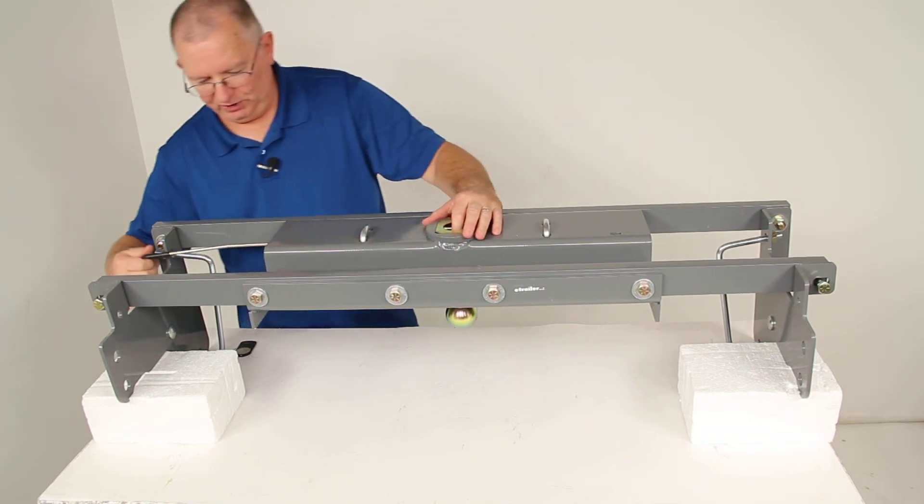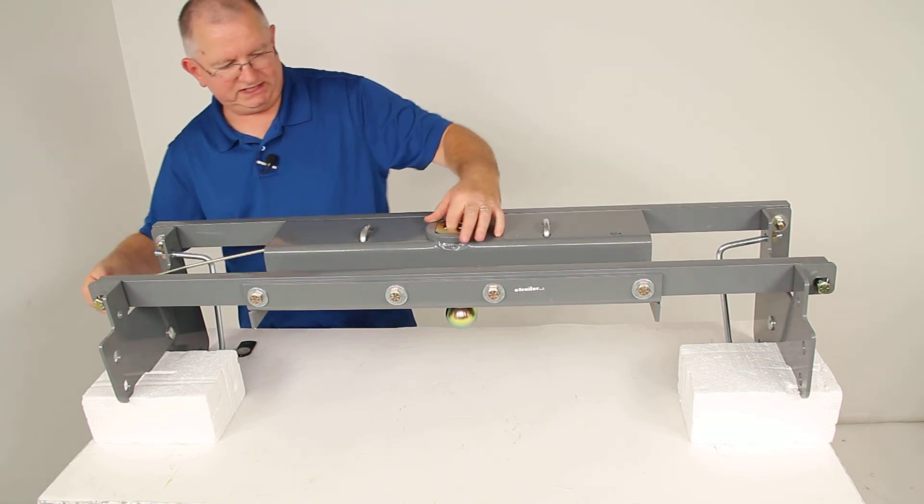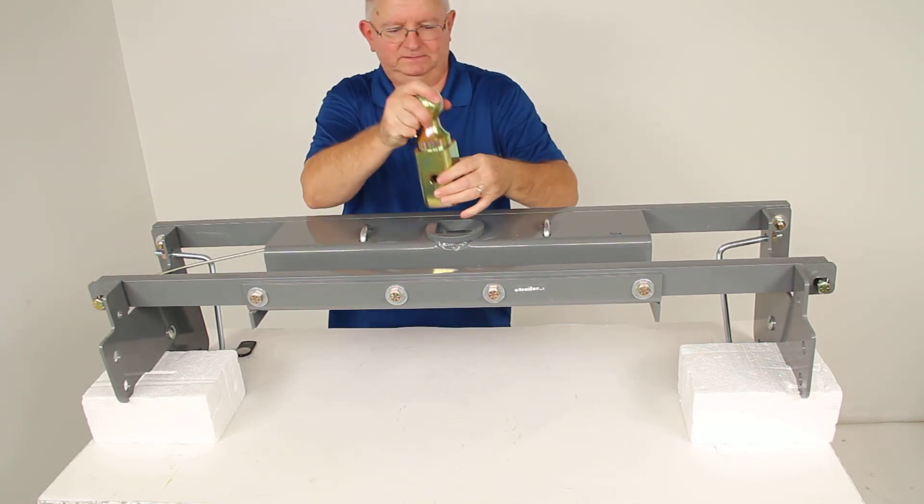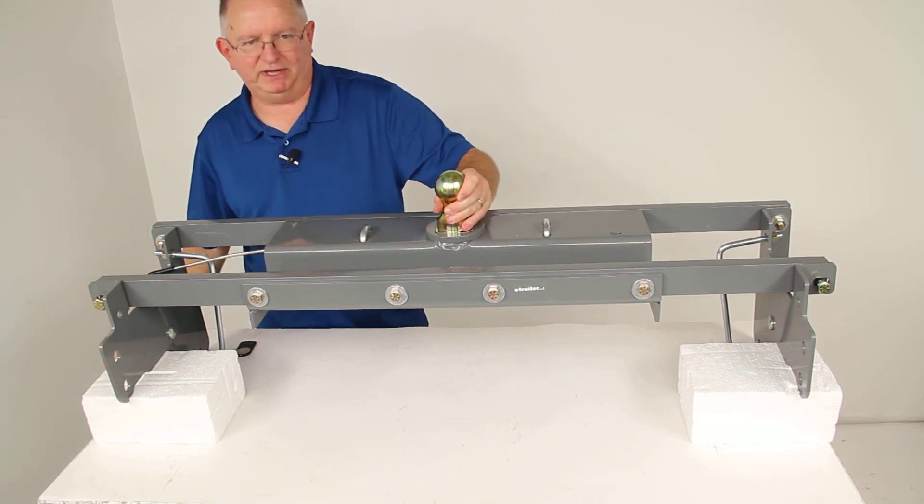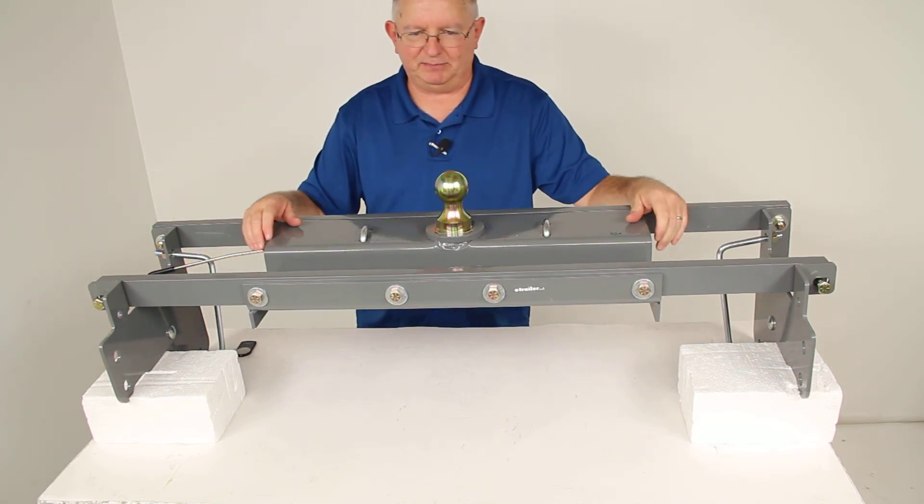If you're going to need to hook up your gooseneck, just pull it out, twist it, locks it open, turn your hitch ball over, release the handle, and that pin will lock it into place. Very simple operation.